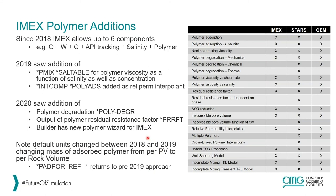For those who have been using polymer in IMEX for the last year or so: between the 2018 and 2019 releases, we changed the way absorbed polymer was referenced — instead of referencing it to a pore volume, we reference it to a rock volume. We have the keyword 'polymer adsorption reference' — if you put it to minus one, it returns you to the pre-2019 approach if you've built your model around the pore volume approach rather than rock volume.